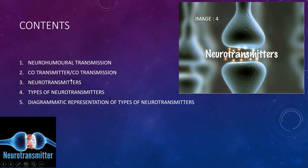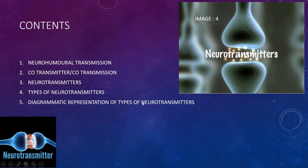Let's quickly go through the content slide. It comprises of neurohumeral transmission, co-transmitters or co-transmission, neurotransmitters, types of neurotransmitters, and a diagrammatic representation of types of neurotransmitters.